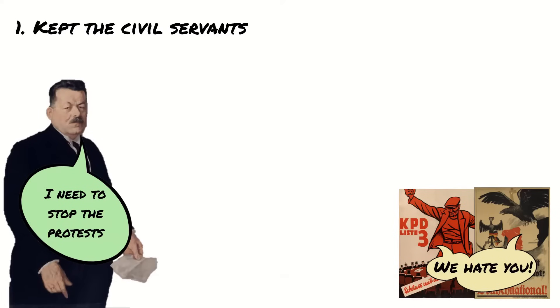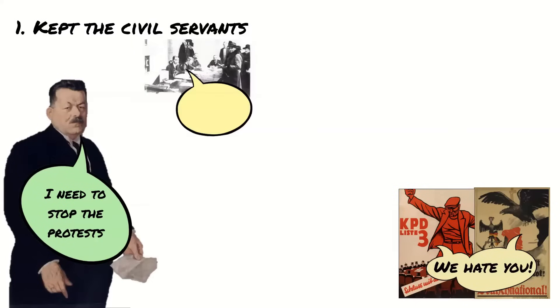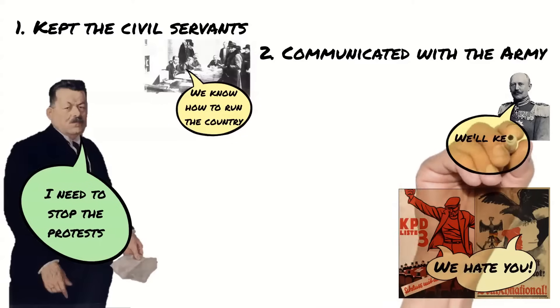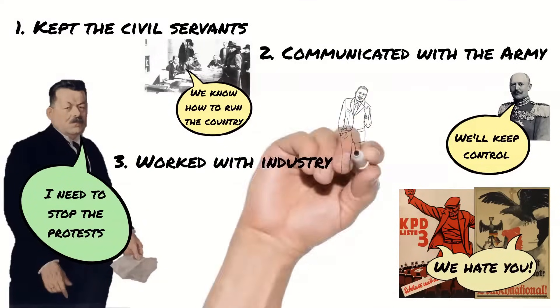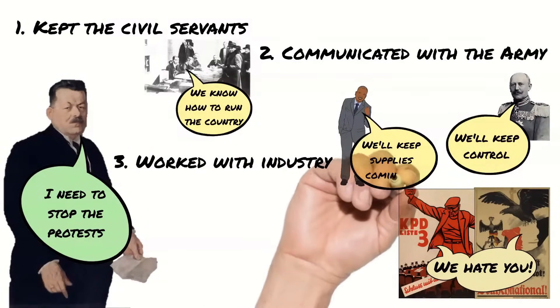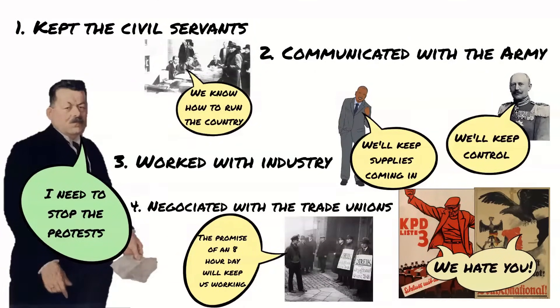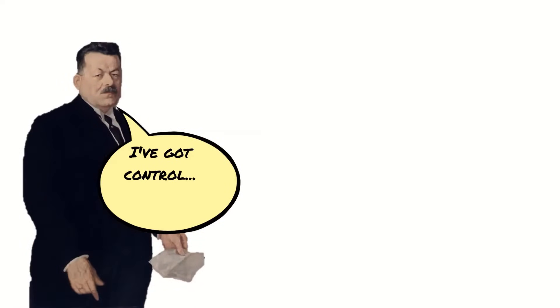To keep order and prevent another uprising Ebert took several steps. Firstly he kept all the existing civil servants who had run Germany under the Kaiser, ordering them to work with the workers and soldiers councils to keep schools, taxes and public services going. Secondly he kept up communication with the leaders of the army so they would help keep control. He met with the leaders of industry such as coal and shipping to reassure them and encourage them to continue to supply Germany. Finally he met with the leaders of trade unions and agreed to certain changes to working conditions to keep them on side. Ultimately Ebert managed to get control of Germany in the month following the armistice, but his control was weak.